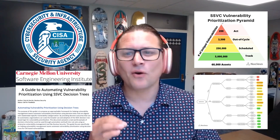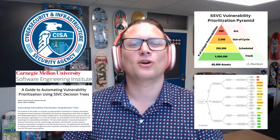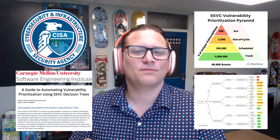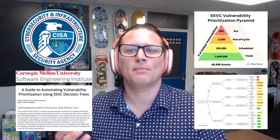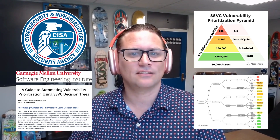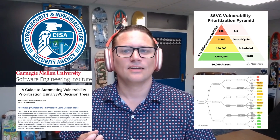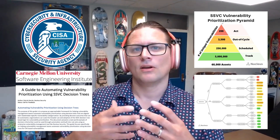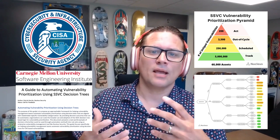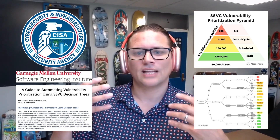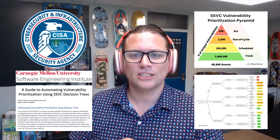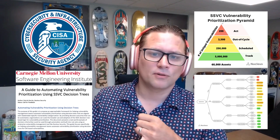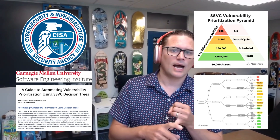Today I will be diving into the Stakeholder-Specific Vulnerability Categorization, also known as SSVC, one of my favorite topics. SSVC was developed by Carnegie Mellon University's Software Engineering Institute in collaboration with CISA, and I think it's a revolutionary approach to vulnerability management that can help organizations get alignment with different stakeholders that might have different perspectives within their organization. During this video, I'm going to hop into Carnegie Mellon's version of SSVC at a high level.